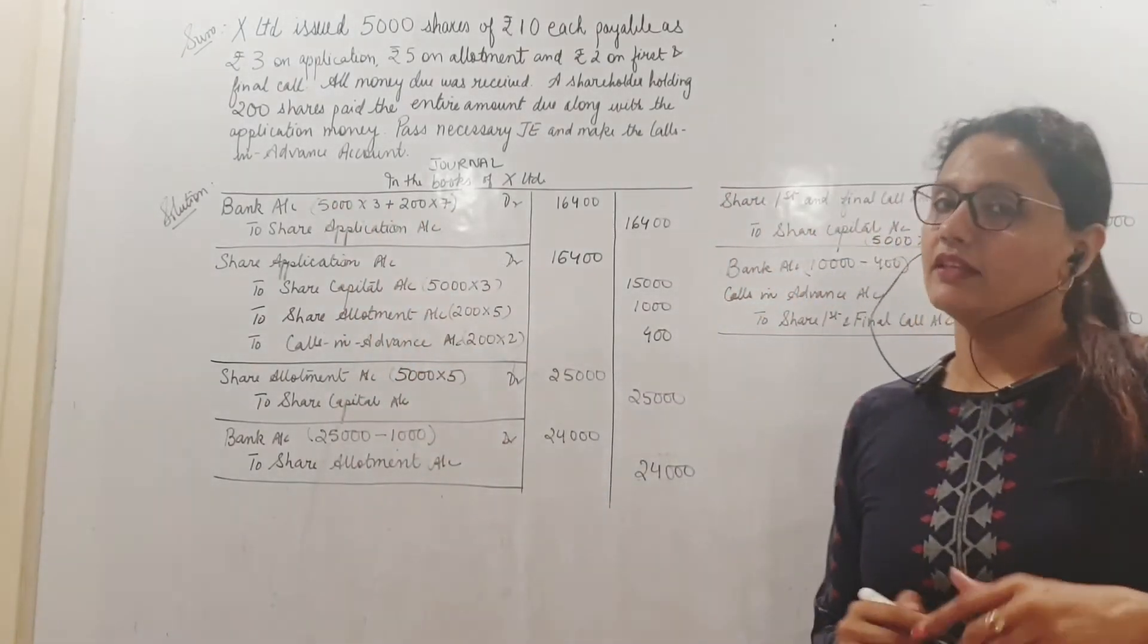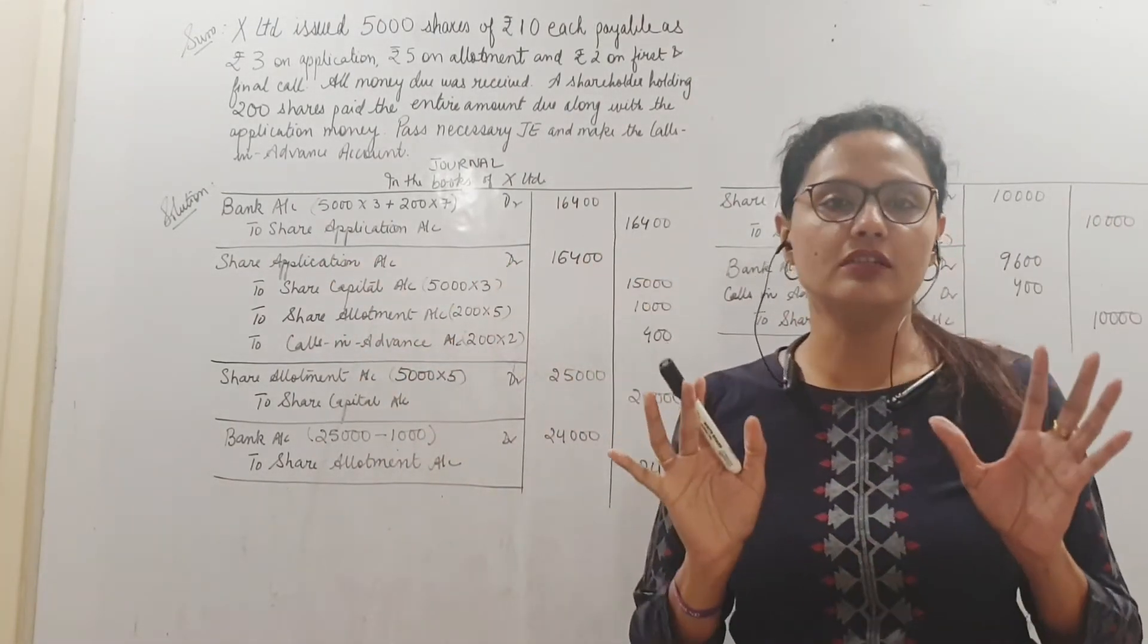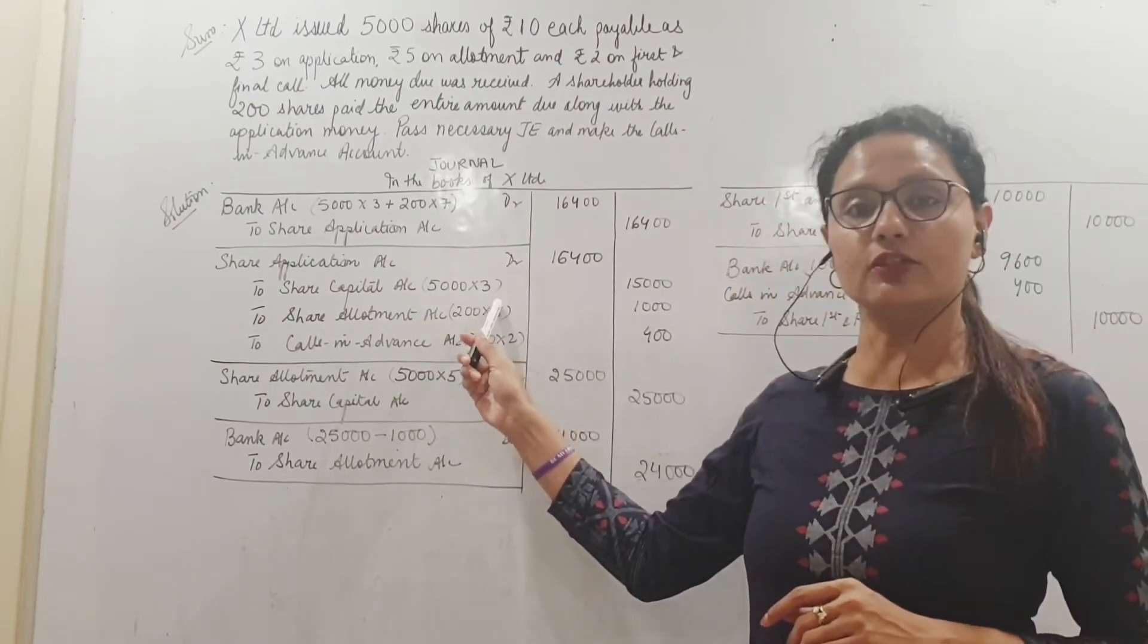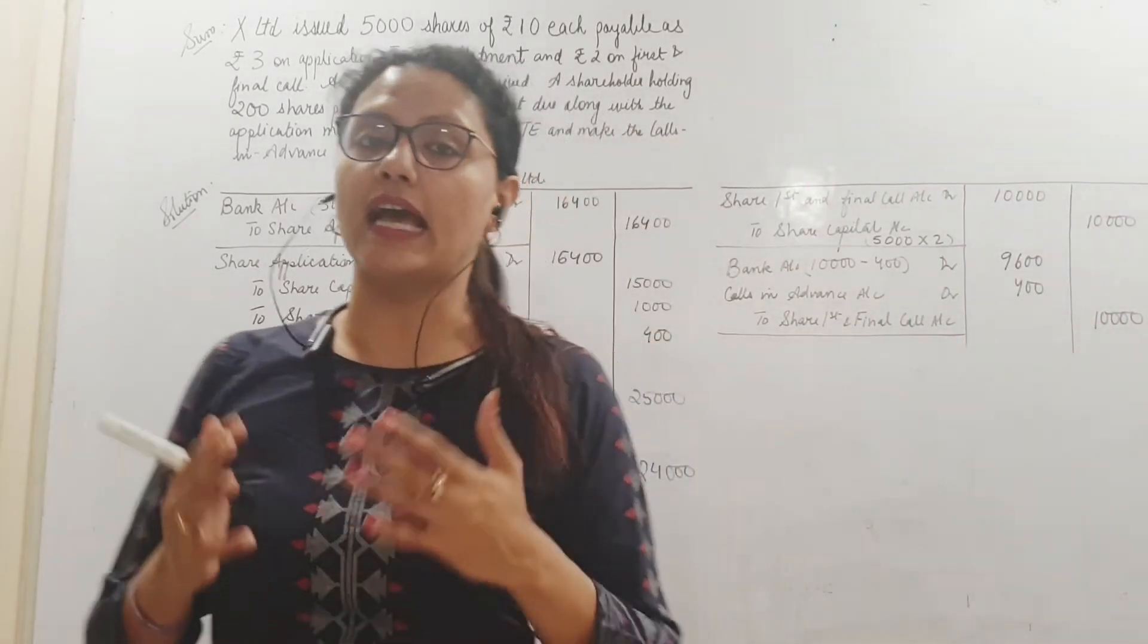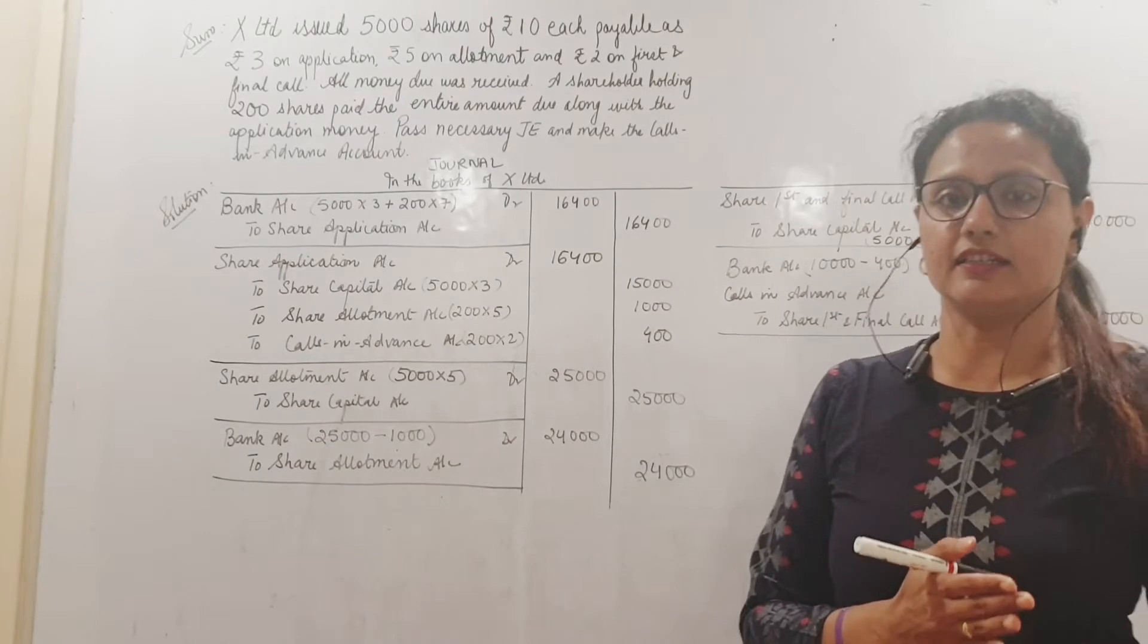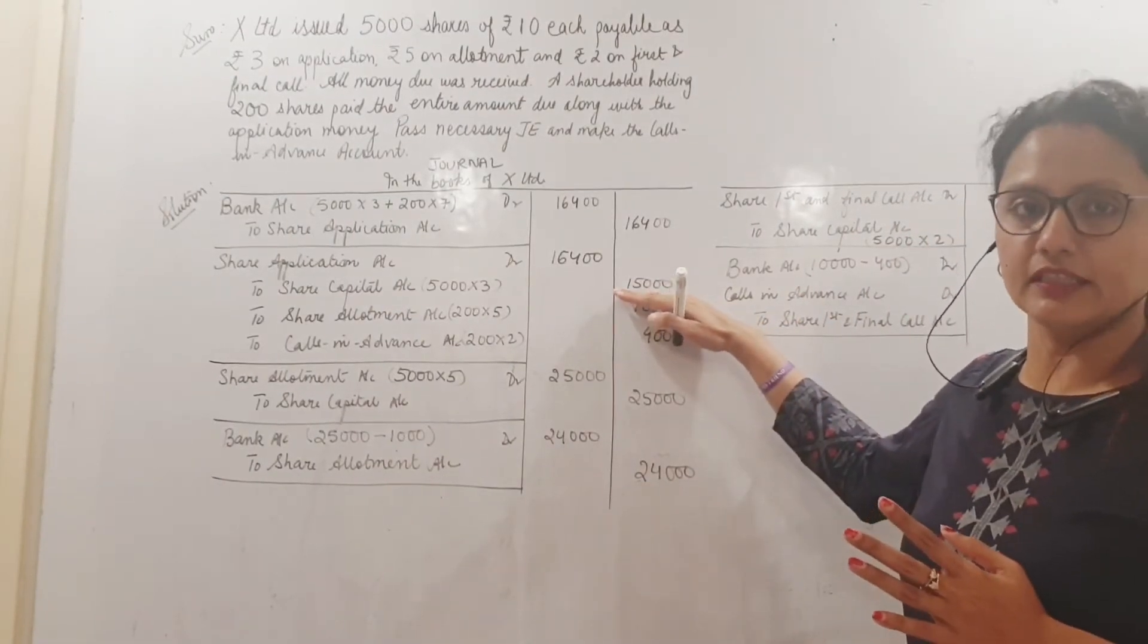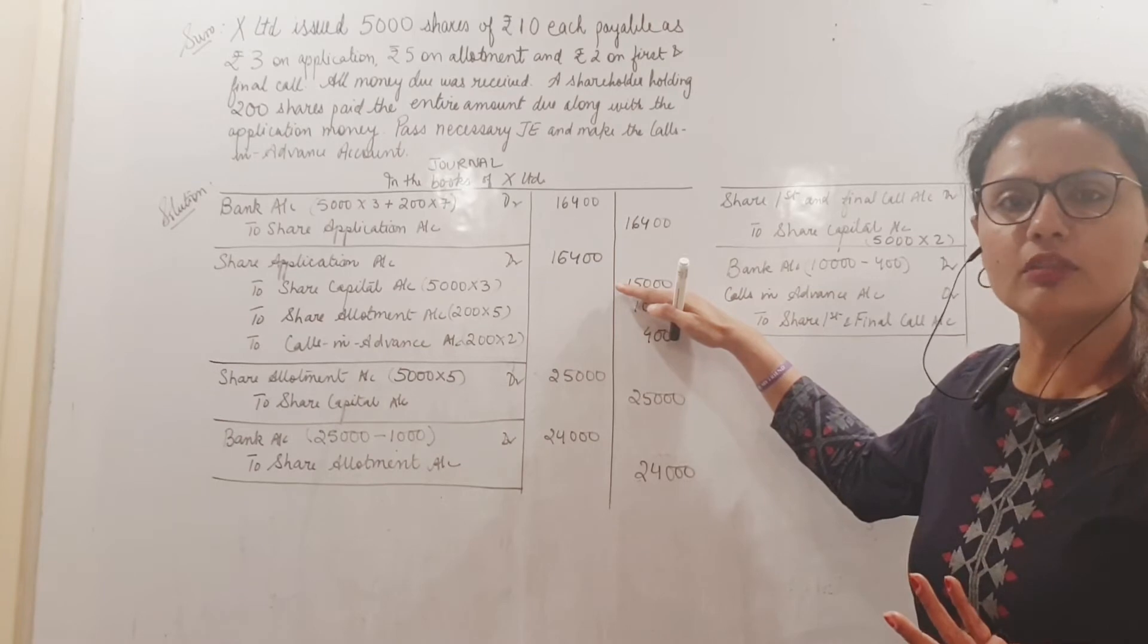This application money we need to transfer to share capital. So share application account will be debited to the entire 16,400 that we have received. So share capital will be credited only with 15,000, meaning 5,000 into 3 rupees. This was due on application. We cannot credit the share capital anything more than that right now. Whatever we have called, only that we can credit. We cannot credit more than that because we haven't made the call.